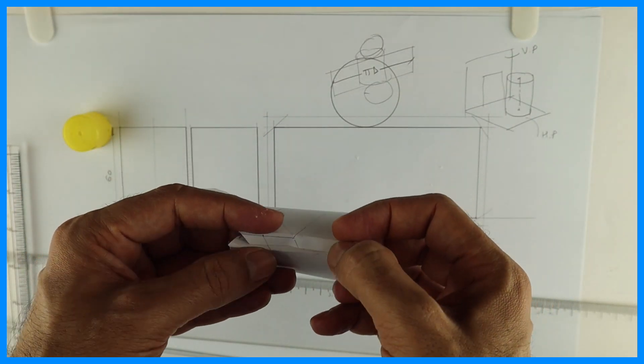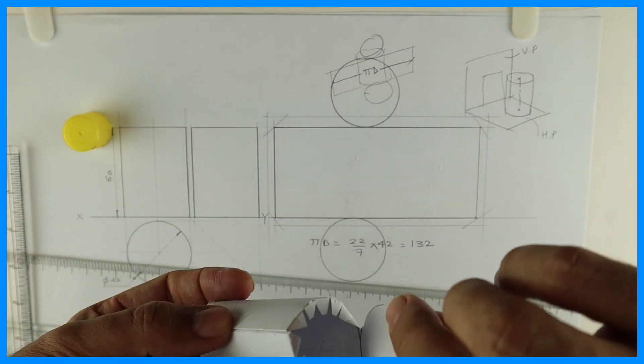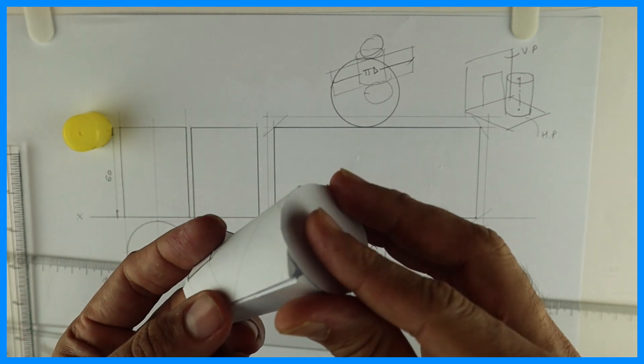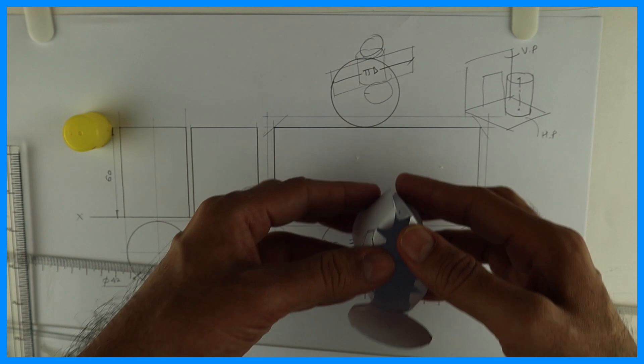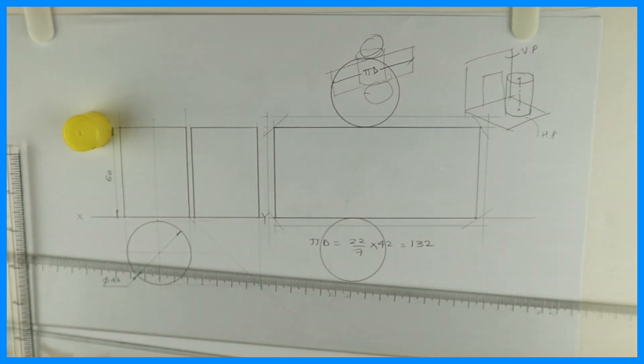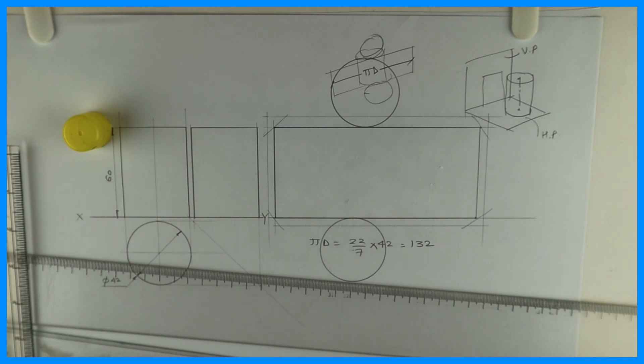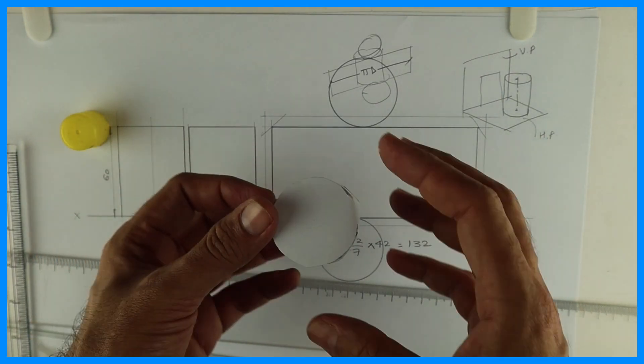When you do this, see this, you join this, it will become proper cylinder. And then you stick this also as well as the top portion also, see, like this.